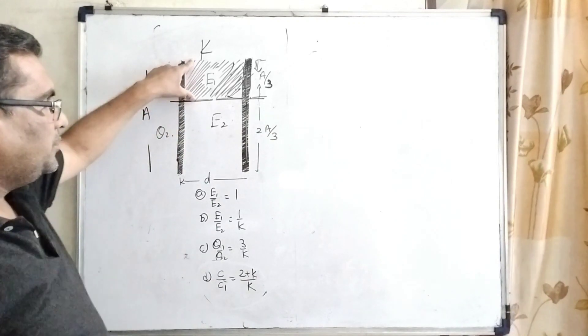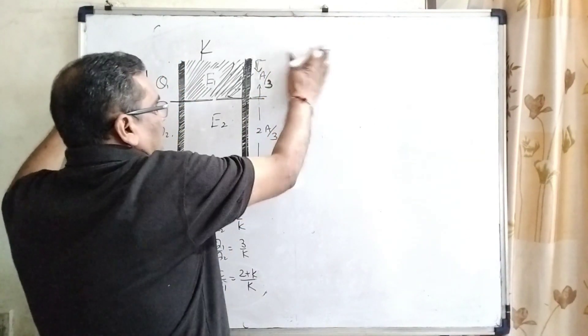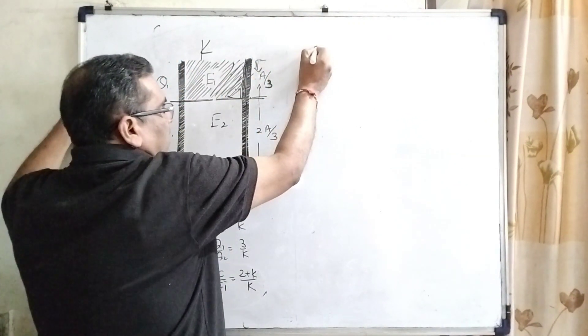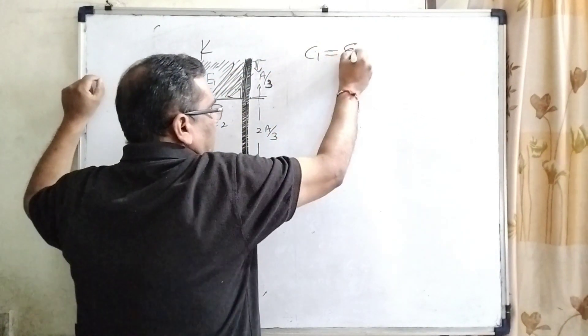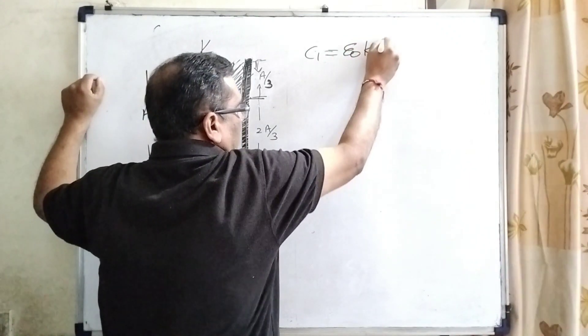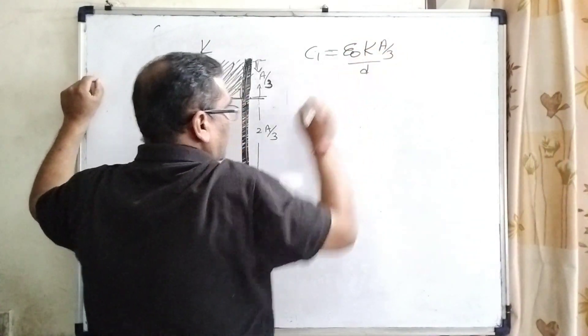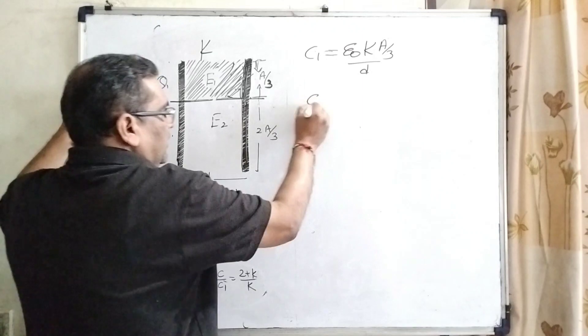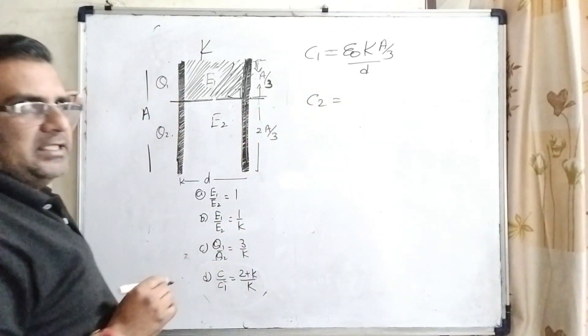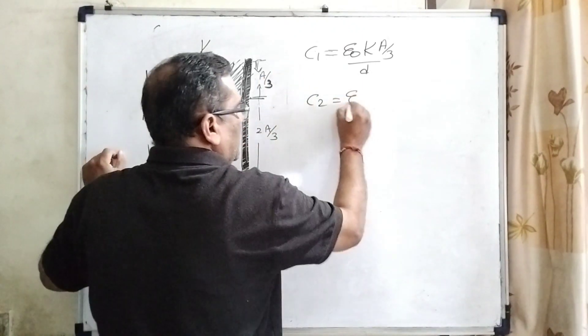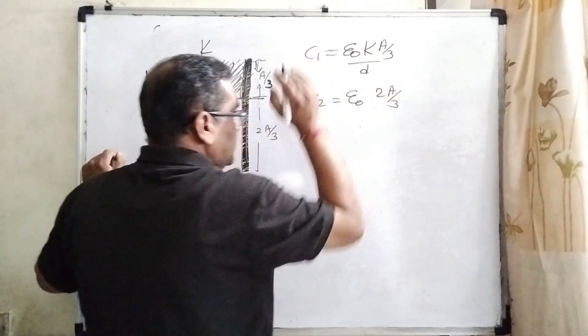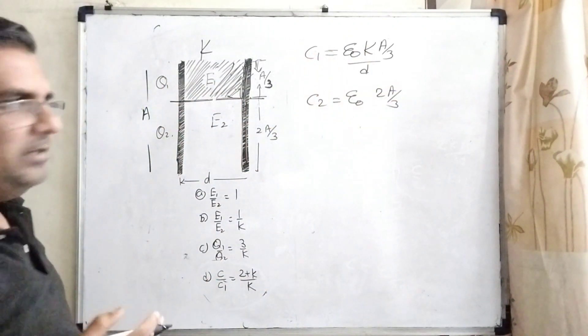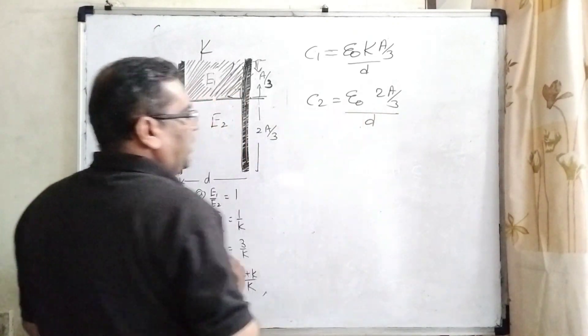So here we are using C1. C1 means with dielectric medium. Capacitance with dielectric medium is epsilon naught K A by 3d. And with air, we can consider that is C2, epsilon naught 2A by 3d, because it is air, K is 1, and the distance is same, d.